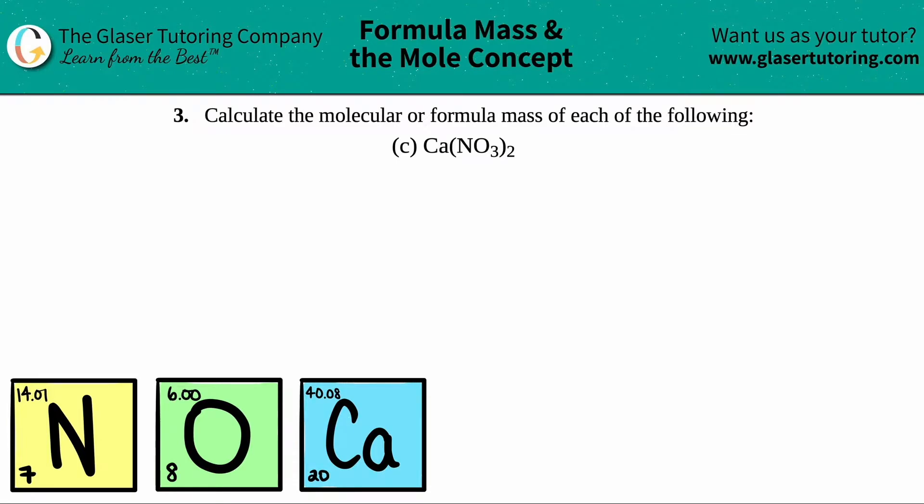Number three, calculate the molecular or the formula mass of each of the following, and then we have letter C. So in this case, we have to find the molecular mass or the formula mass of calcium nitrate, which is Ca(NO₃)₂.